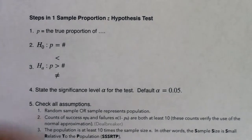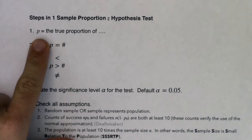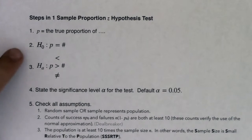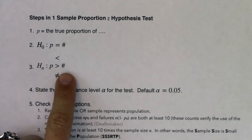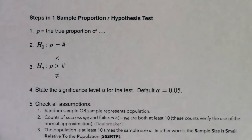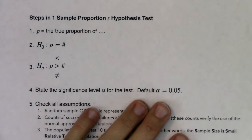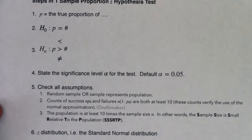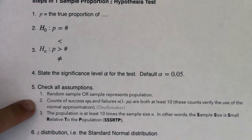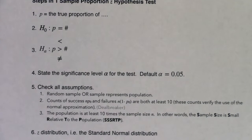Step one: always define that parameter. In proportion land, you're going to have P equaling the true proportion of something. Your null and your alternate are here — you'll have P equal to a number. Your alternate will still have the P and the same number, but with a different symbol. In step four, give me your alpha. If your alpha isn't given, default to 5%. You have to check your assumptions — these are always the assumptions we use in proportion land for one sample hypothesis tests. Remember that assumption two is the deal breaker. If we don't meet this one, we're not on a sampling distribution with a normal bell curve and we can't proceed with the problem.